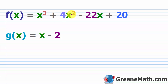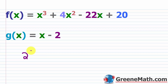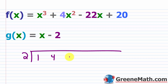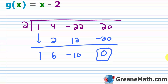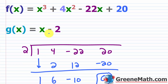Now we have f of x equals x cubed plus 4x squared minus 22x plus 20, and g of x equals x minus 2. We just want to know: is this a factor? Take the number 2, put it out here, and grab the coefficients: 1, 4, negative 22, and 20. 2 times 1 is 2; 4 plus 2 is 6; 2 times 6 is 12; negative 22 plus 12 is negative 10; 2 times negative 10 is negative 20; 20 plus negative 20 is 0. So there's no remainder, meaning f of 2 equals 0, and x minus 2 is in fact a factor.